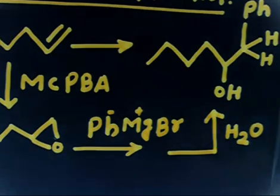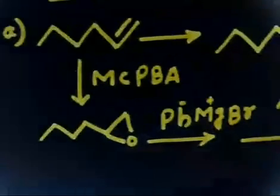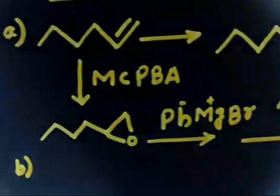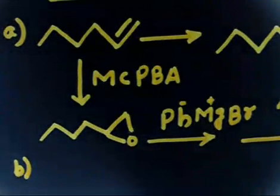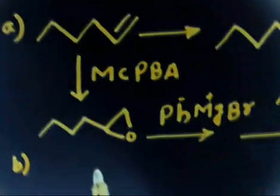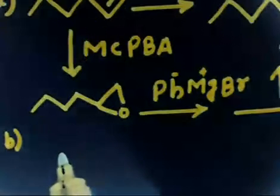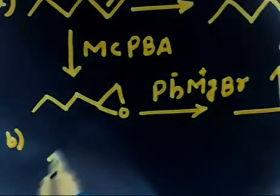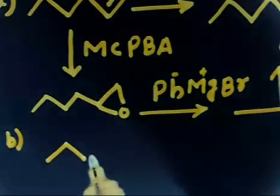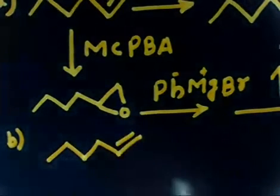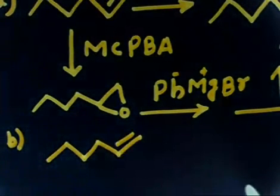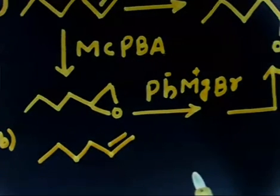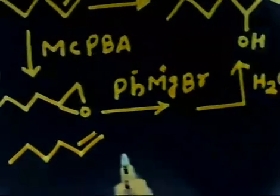Now the next compound — Part B. Once again you have 1-hexene, carbons 1, 2, 3. From this molecule you have to prepare 1-methoxy-2-hexanol.